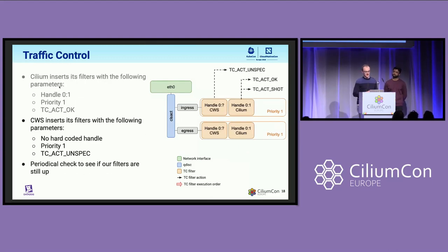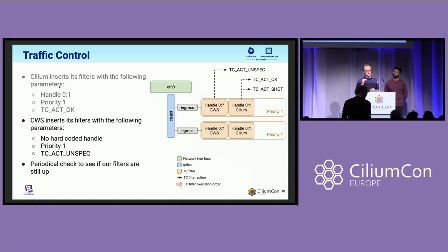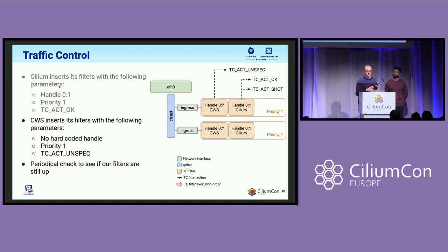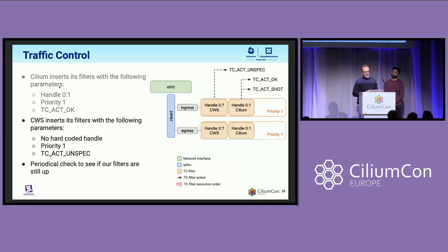We decided to hardcode priority one as well, because we wanted to use the execution ordering rule that says the latest inserted program is the first one triggered. The rationale was that Cilium would set up the pods, set up the networking, and then we would load our own instrumentation of the different interfaces we care about. We didn't hardcode any handles because we didn't want to choose one specific number — Cilium is only one CNI out there and others could be using handles as well. We also made sure to always return TC_ACT_UNSPEC so that Cilium would make the ultimate decision when it comes to network packets.